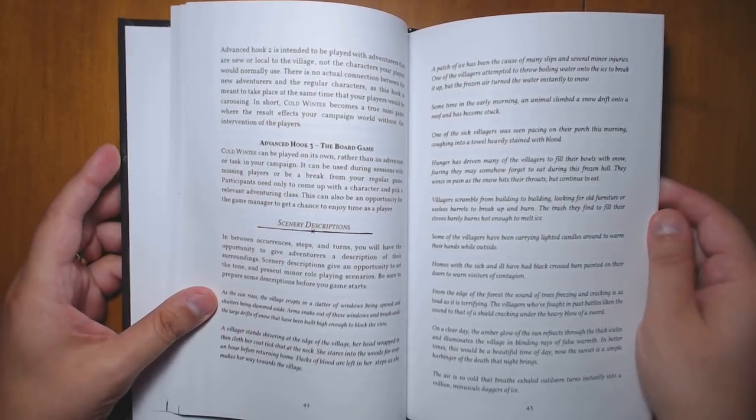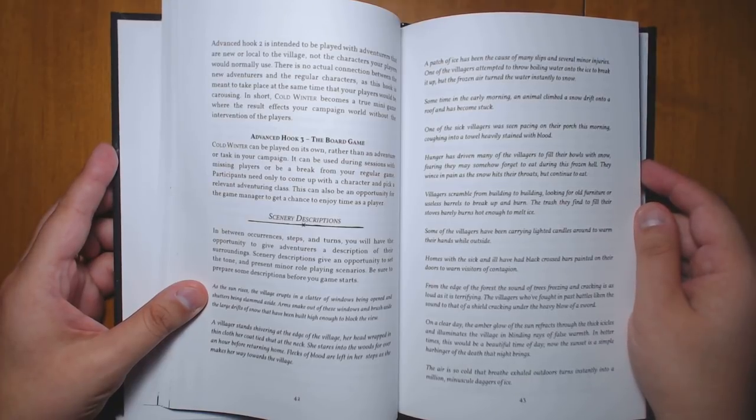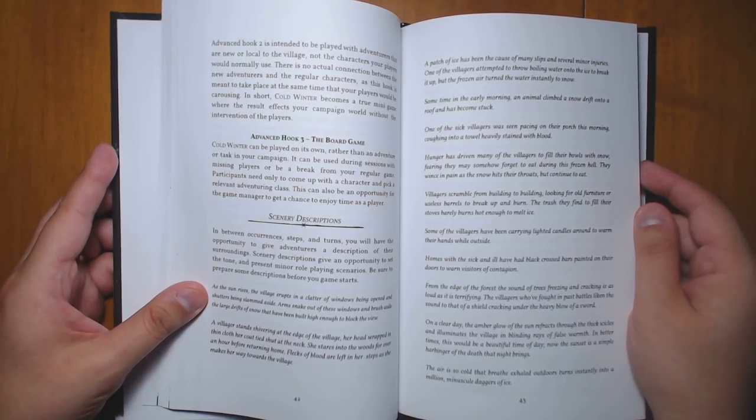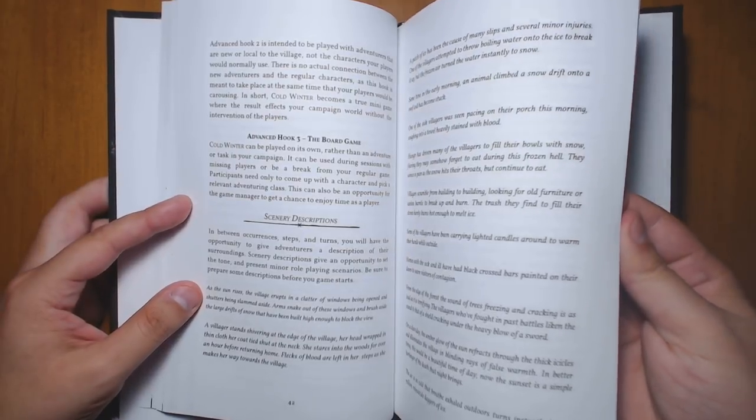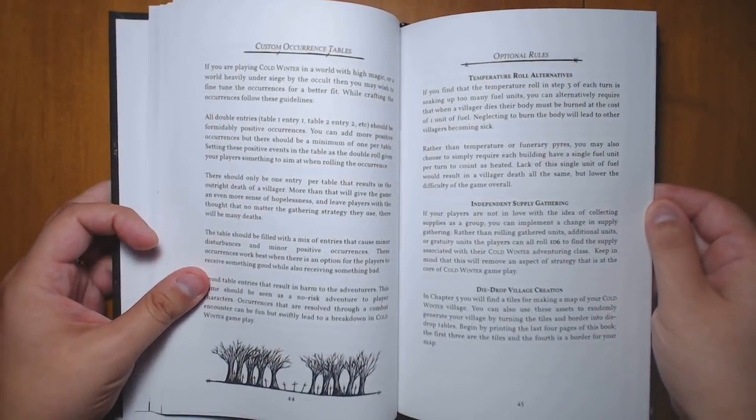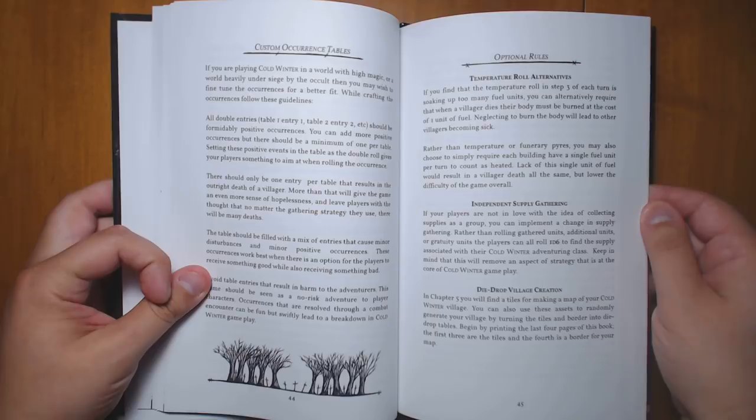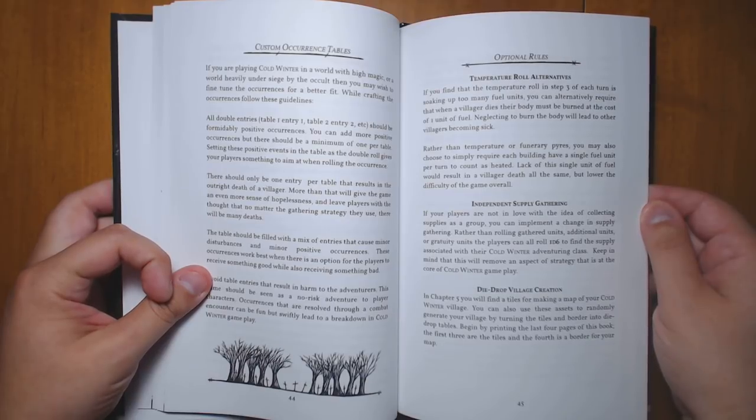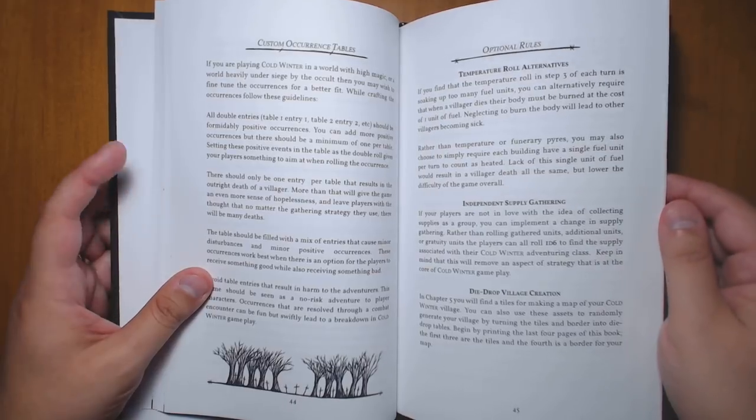You can play it simply as a board game. So this game could definitely be played on its own. You don't have to play it as part of the downtime or as a side mission in between missions in an RPG. You can just play this as a game itself, right? It's a fully-fledged co-op game. He has lots of cool little scenery descriptions that you can use to inject some color into the occurrences. You can create, of course, custom occurrence tables depending on where you want to set this if you want to play it somewhere else in another setting. And he gives you advice on how to do that while not unbalancing the game.